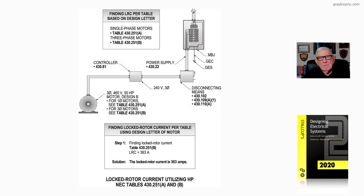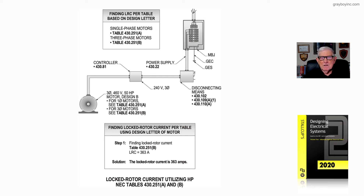In step 1, we apply the design letter B and refer to table 430.251, as instructed from 430.7A9 on around page 310 in the NEC. Based upon design B in step 1 of the illustration, we find 363 amps.